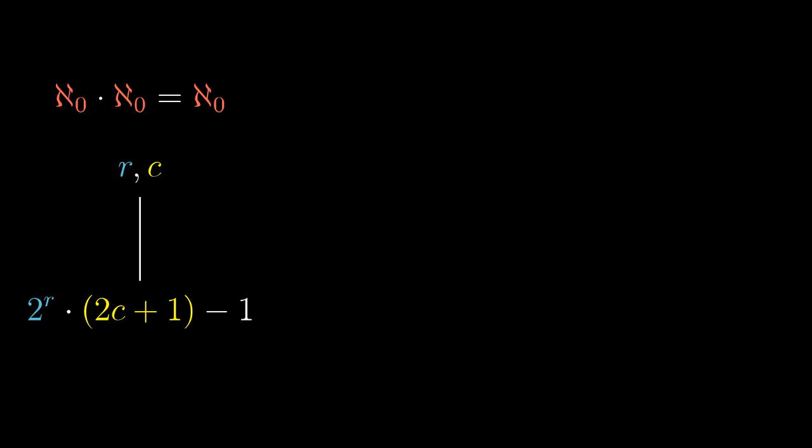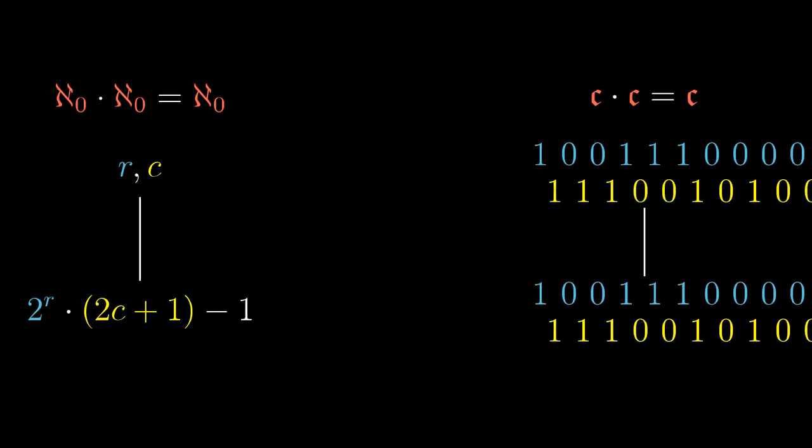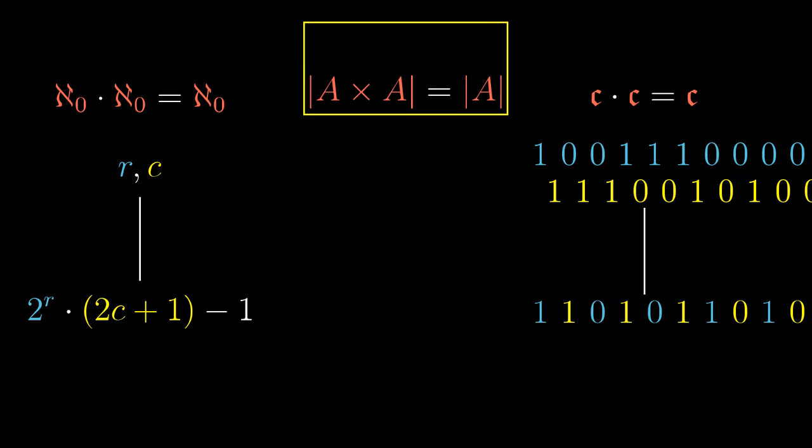There is an obvious question of whether such theorem holds also for other cardinal numbers. It is not true for finite cardinals bigger than 1 - 2 times 2 is not 2 - but what about infinite cardinals? Say continuum. Continuum counts the sequences of zeros and ones. So we take two such sequences and we would like to encode them into a single sequence. This is trivial: we just zip the two sequences together. In fact, this lemma that the Cartesian product of a set with itself is of the same cardinality is true for all infinite sets.